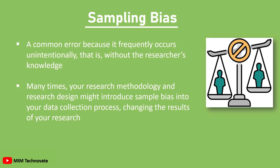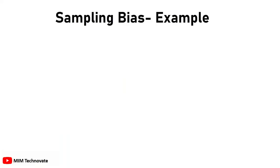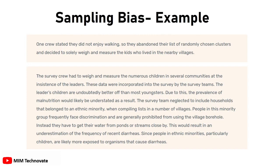Example of sampling bias: One crew stated that they did not enjoy walking, so they abandoned the list of randomly chosen clusters and decided to solely weigh and measure the kids who lived in the nearby villages. The survey crew had to weigh and measure numerous children in several communities at the insistence of the leaders. These data were incorporated into the survey by the survey team. The leaders' children are undoubtedly better off than most youngsters, so the prevalence of malnutrition would likely be understated as a result.